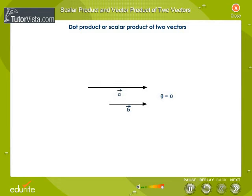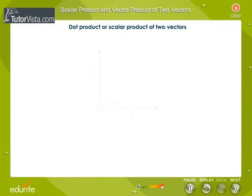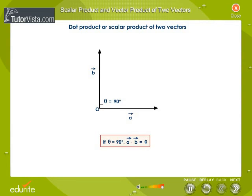If vectors A and B have the same direction, theta is equal to zero, then the scalar product will be equal to the product of the moduli of the vectors, as cos 0° is equal to one. When the vectors are perpendicular to each other, the scalar product is equal to zero, because cos 90° is equal to zero.